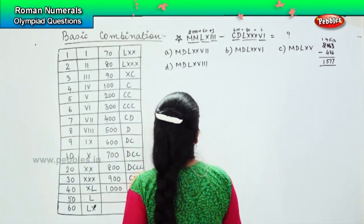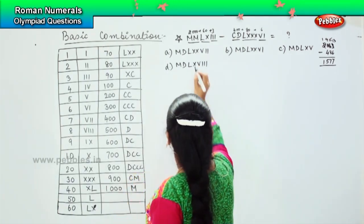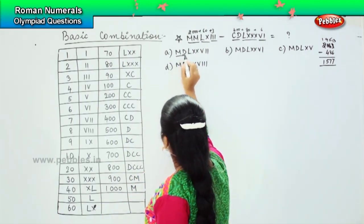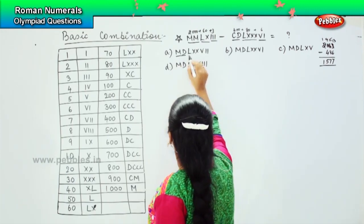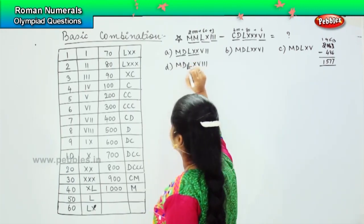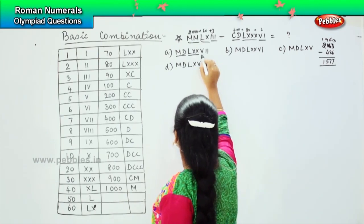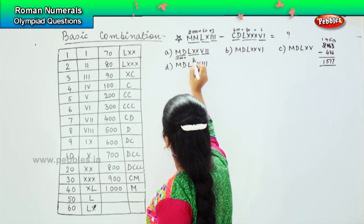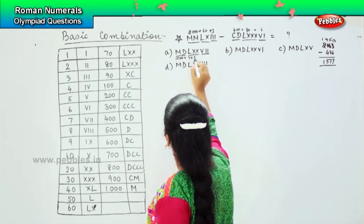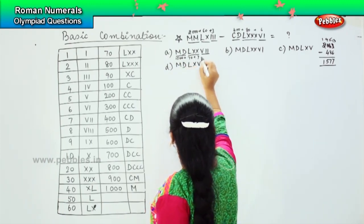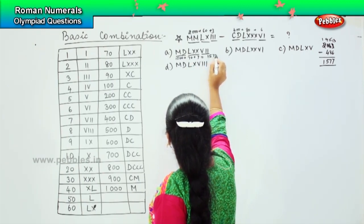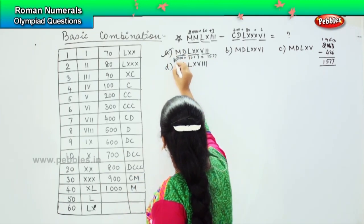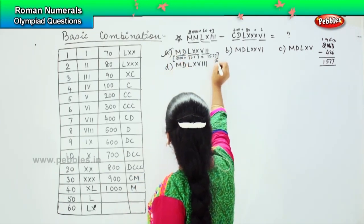So now, how will you write 1577 in Roman numerals? MD which is 1500, L double X which is 70, and 7. So, 1500 plus 70 plus 7, which is 1577. Is this what we were looking for? Yes. So option A is the right answer.